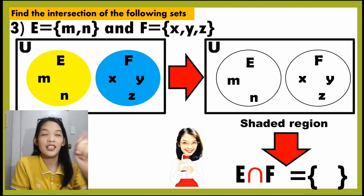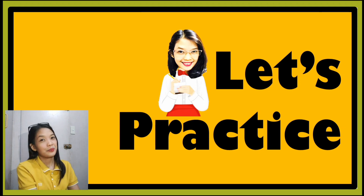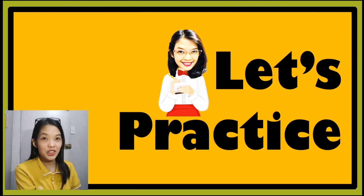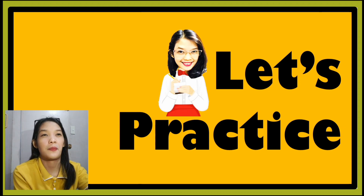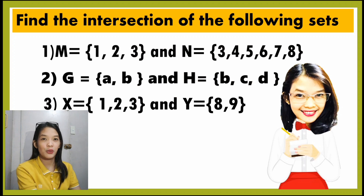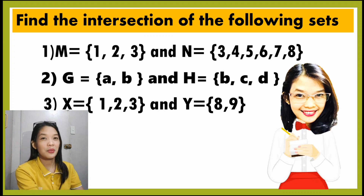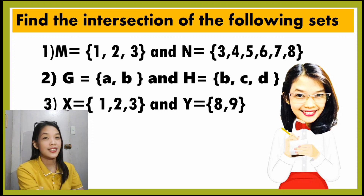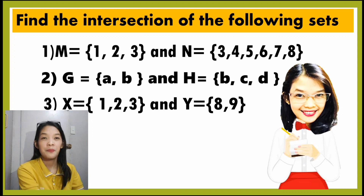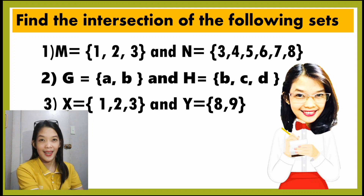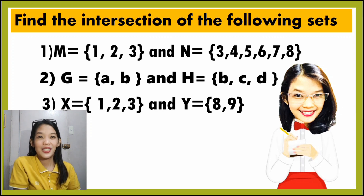No questions? Let's practice. Get some scratch paper because you're going to answer the intersection using Venn diagram. Find the intersection of the following sets. Number 1: set M has the elements 1, 2, and 3, and set N has the elements 3, 4, 5, 6, 7, and 8. Number 2: set G has the elements A and B, and set H has the elements B, C, and D. Number 3: set X has the elements 1, 2, and 3, and set Y has the elements 8 and 9. You can pause the video while answering this. Good luck!